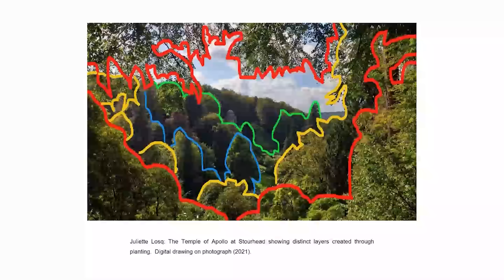How do we contextualise the teleorama in its expanded three-dimensional form? Comparing and contrasting the teleorama with the three-dimensional picturesque — the picturesque garden — highlights the distinctiveness of the teleorama as a form. There is an equivalence between how the landscape garden and the teleorama construct a vista. Both use trees and shrubs to frame a distant building, with banks of planting creating distinct layers that equate to the separate layers of the teleorama. There are also significant differences between the two in terms of spatiality.